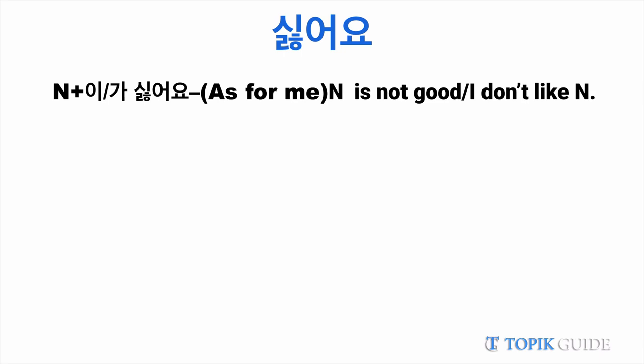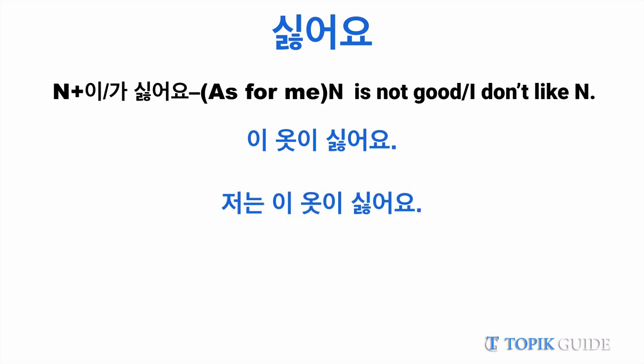Technically, literally, it means 'as for me, something (noun) is not good,' but basically it means 'I don't like this thing.' For example, if you say 'iyoshi shiroyo,' you are literally saying 'as for me, this dress is not good,' which means you don't like that dress. In this sentence, chonen is hidden, so the complete sentence should be 'chonen iyoshi shiroyo.'